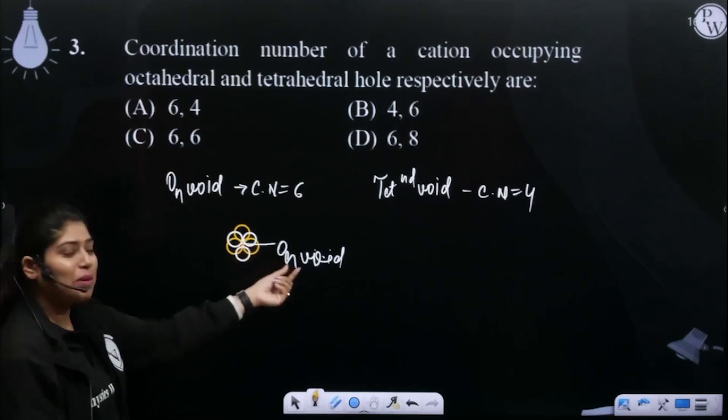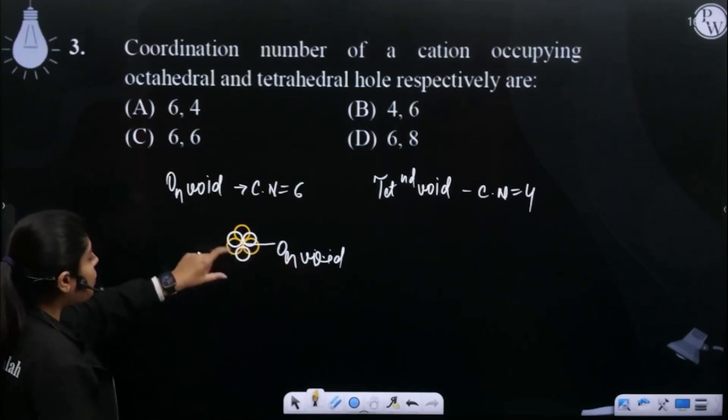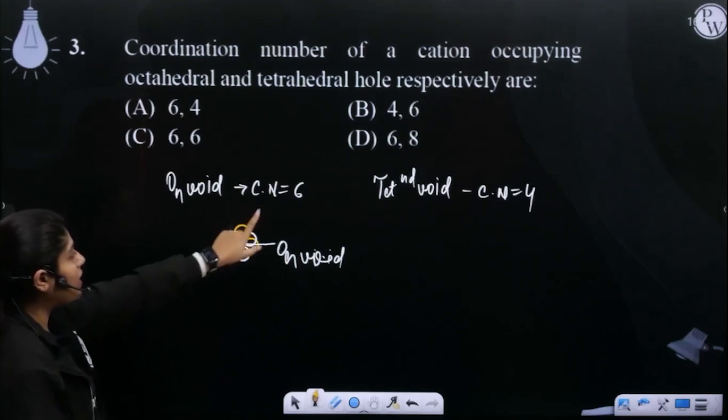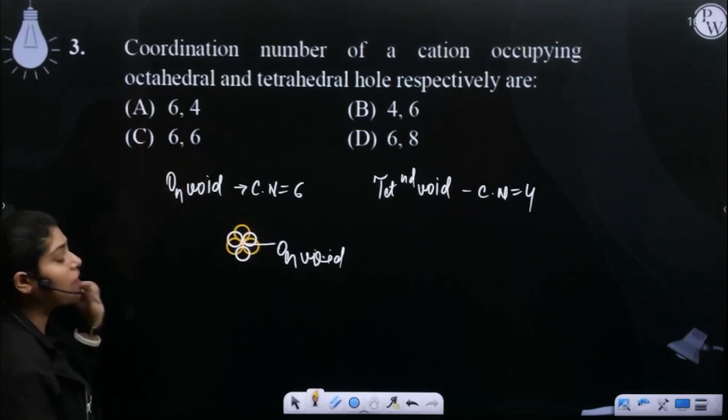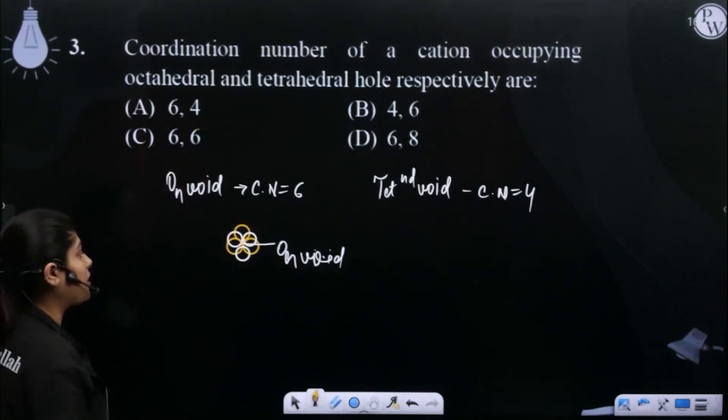This space created basically what is octahedral void. So this is how many spheres are surrounded by this? Six spheres. How much is the octahedral void? Six spheres.